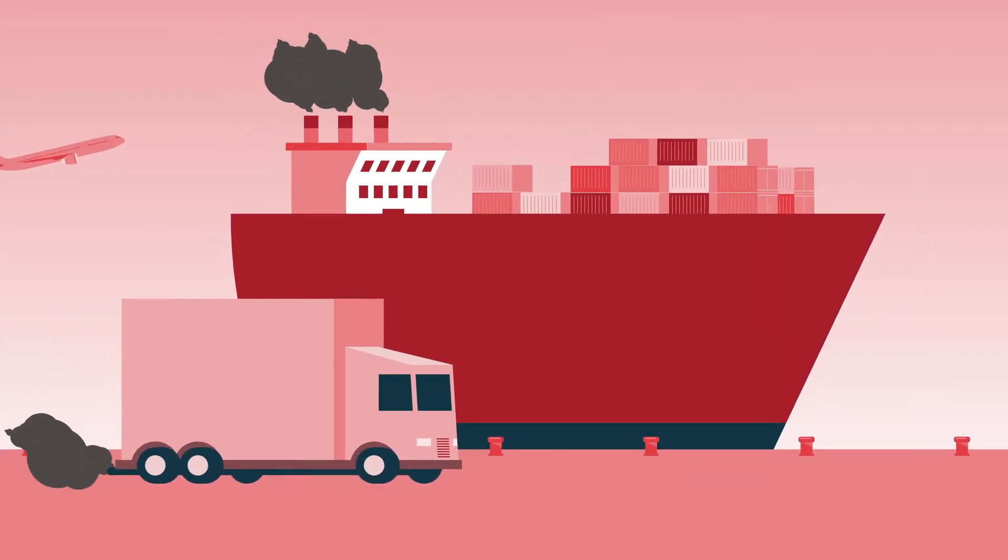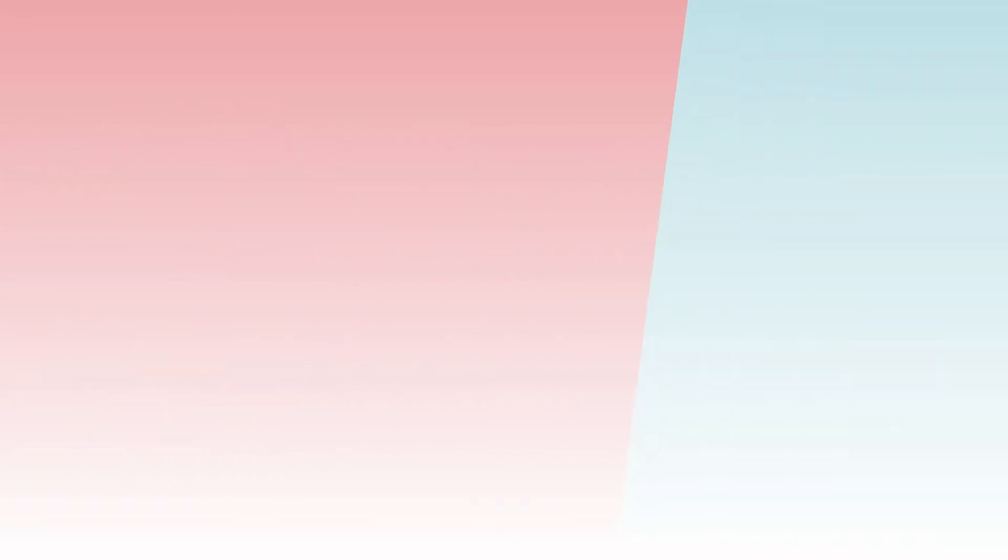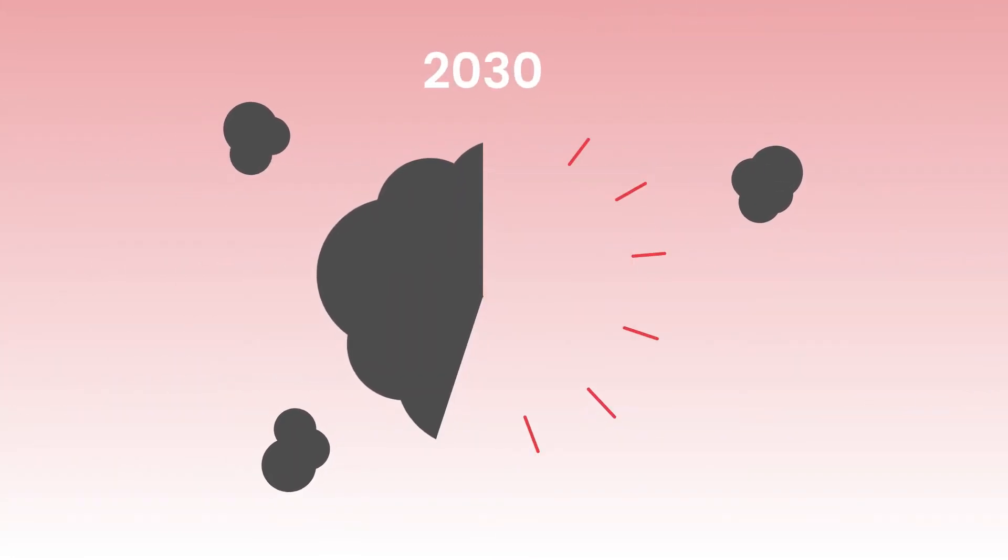Today, transport is responsible for more than 25% of greenhouse gas emissions in Europe. To become climate neutral by 2050, the EU needs to cut its emissions by at least 55% by 2030.